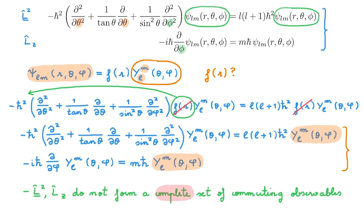To fully specify a quantum state, we need additional operators beyond the angular momentum operators. We're not going to worry about this for now, because the aim of the videos on angular momentum is to learn about these specific operators. When we use them to solve specific problems, we will need to combine them with additional operators. You can find a very good example of this in our videos on the hydrogen atom, where we add the Hamiltonian to the angular momentum operators to define a complete set of commuting observables to fully specify the quantum states of the hydrogen atom.